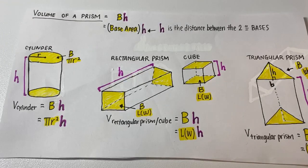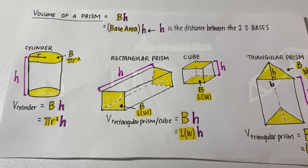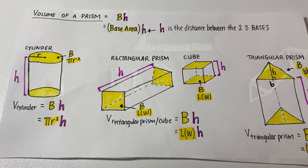Volume of a prism: B times H. Where B is the base area, and H is the distance between two congruent bases.